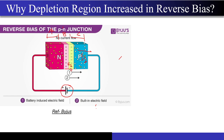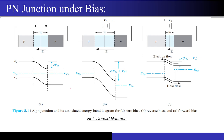These regions A and C are called quasi-neutral regions for a specific reason. Now, looking at the energy band diagram for reverse bias and forward bias — in these quasi-neutral regions, is there any slope in the energy band diagram along the x-direction?